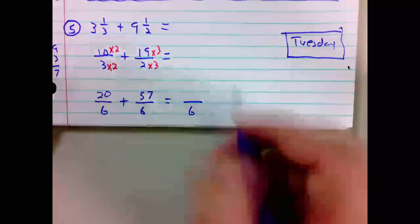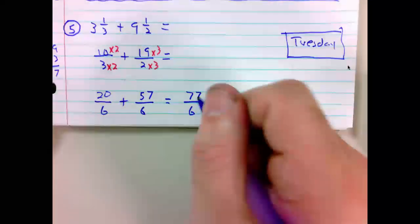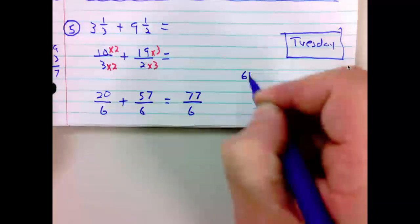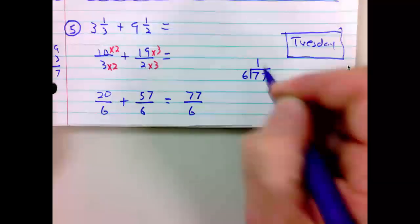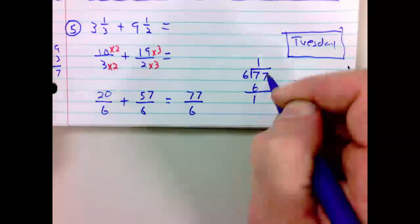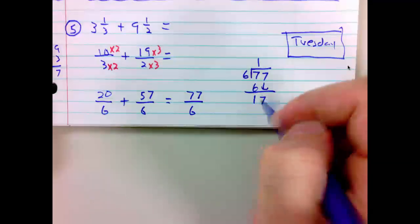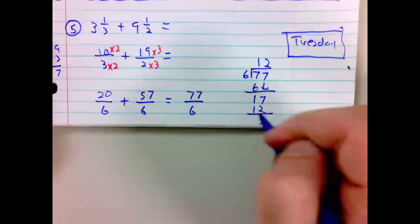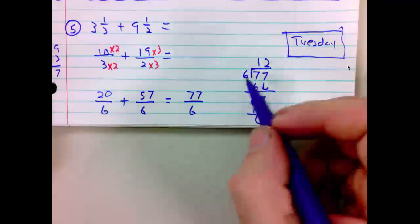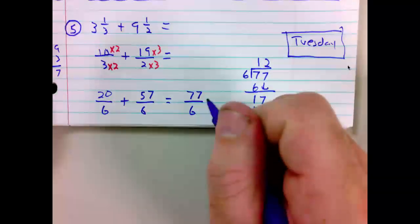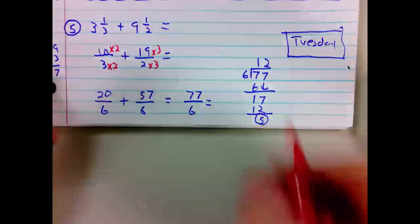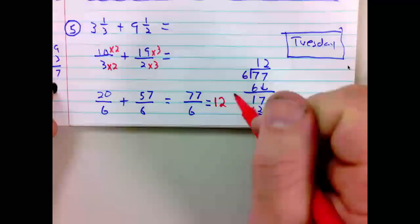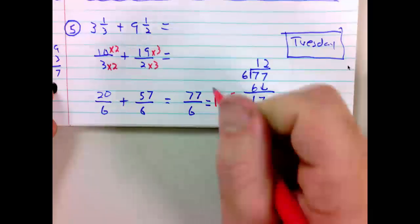We now have the common denominator of 6. Summing 20 and 57, we get 77. Now, 6 into 77. Again, to my scratch paper, 6 goes into 77. 6 into 7 once, 1 times 6 is 6. Subtracting, bringing down my 7. 6 into 17 twice, 2 times 6 is 12. Subtracting is 5, this is my remainder. I express my remainder over my divisor of 6. So 77 over 6 is equivalent to 12 and 5 over 6. That is my final answer.